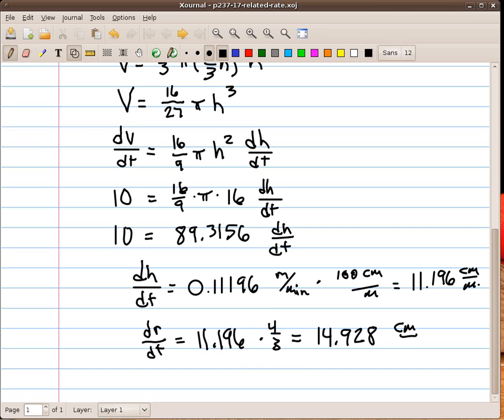I want to make sure I'm putting minute and not meters there. So, here's the rate at which the radius is changing when the height is 4 meters. And here's the rate at which the height is changing at 4 meters.